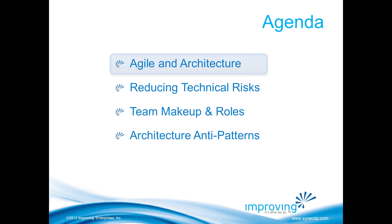The agenda covers how architecture is different in the Agile world and how expectations have changed; how to reduce technical risk in Agile; the consequences of not paying attention to architecture and design; team composition and roles around architecture; and finally a set of anti-patterns to be aware of with architecture in general, not just in an Agile context.